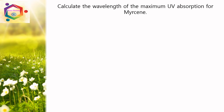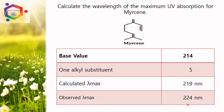Next: calculate the wavelength of the maximum UV absorption for mesrin. The structure of mesrin is an acyclic diene with 1 alkyl substituent. Base value is 214 nm, 1 alkyl substituent adds 5, so totally we get 219 nm. Observed lambda max value is 224 nm.